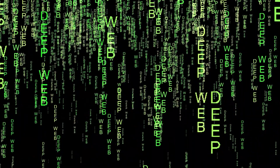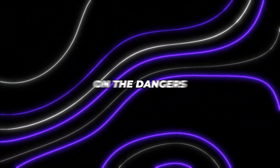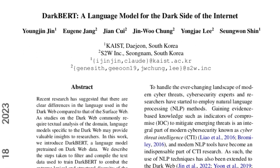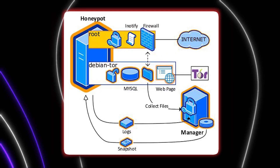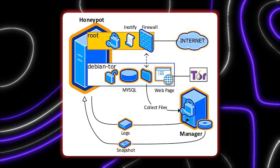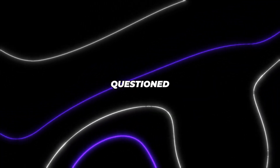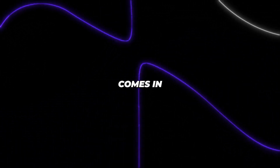So bearing all these factors in mind, you can understand that it might be difficult to keep an eye on the dark web. S2W has done previous research on the dangers of these sorts of fraudulent activities and has looked at the language used on the dark web as well. There have even been attempts by S2W to use language models on the dark web before, but they didn't work that well and their effectiveness has been questioned. So that's where DarkBert comes in.